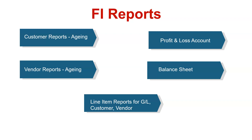Customer and vendor aging reports, profit and loss reports, balance sheet, and customer-vendor GL line item reports are the most widely needed reports for any organization. The trainer will not only teach how to generate these reports but also provide the relationship between each report and the behind-the-scenes transactions and tables used. SAP ABAP developers should know these sources, as they will more often than not need to enhance them.